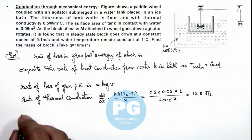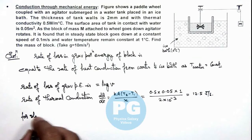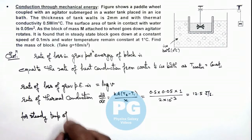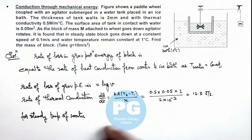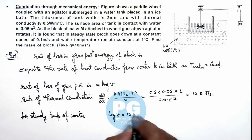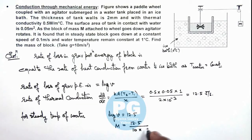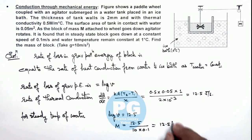For steady temperature of water, we write mgv = 12.5. This gives the mass of the block as 12.5 divided by g times v, that is 10 multiplied by 0.1. Simplifying, the mass is 12.5 kilograms, which is the result of this problem.